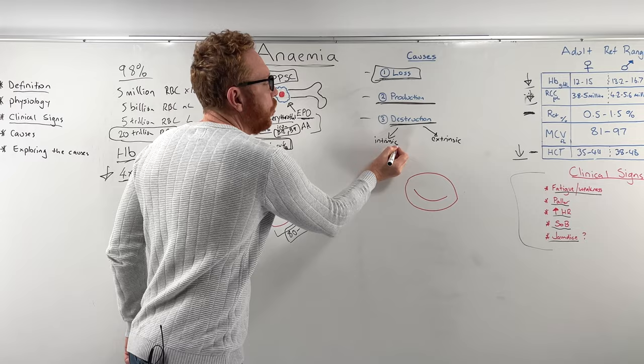So there we have it — a quick overview of anemia. Hopefully you now have a solid understanding of what it is by definition, the basic physiology of how red blood cells are made, how patients are likely to present clinically, and how we classify the cause based on the size of the red blood cell: microcytic, normocytic, and macrocytic.